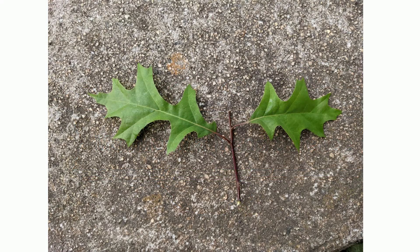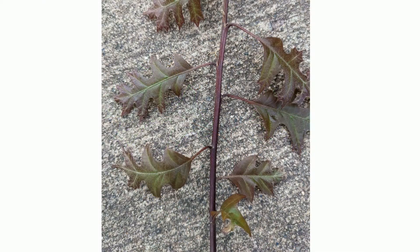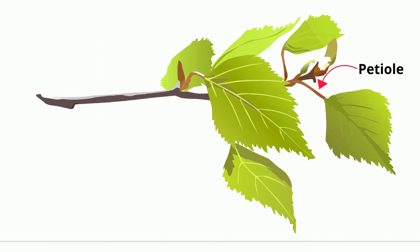A simple leaf is singular and never divided into smaller leaflets. It is always attached to a twig by its stem, which is called the petiole. Check out these examples.